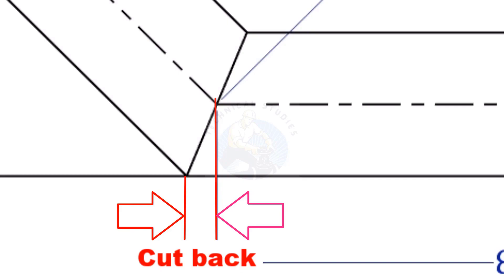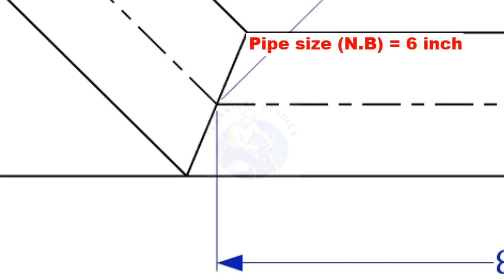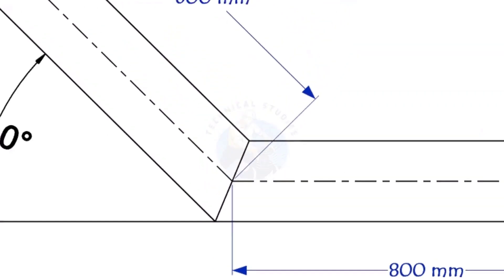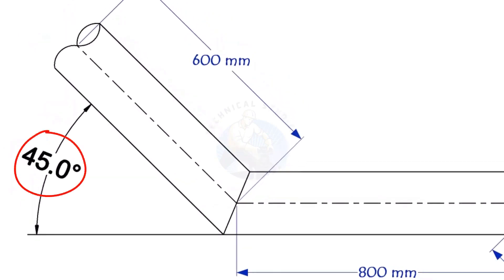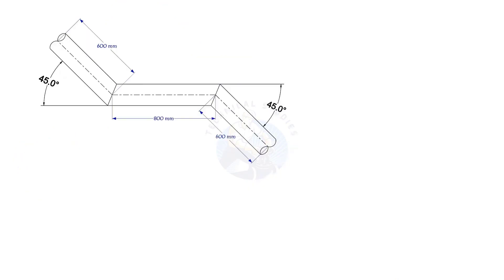To mark a miter cut, we need to know the cutback of the miter. In this offset, the nominal diameter of the pipe is 6 inch. The angle of the miter is 45 degree. This method is suitable for cutback of any degree.